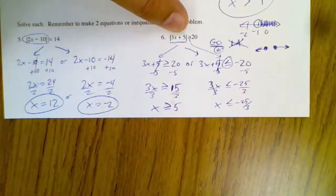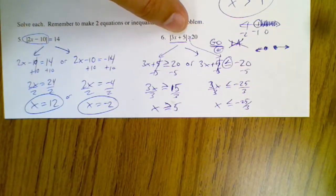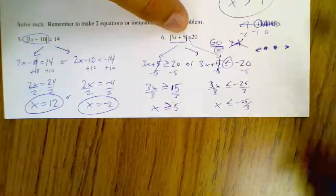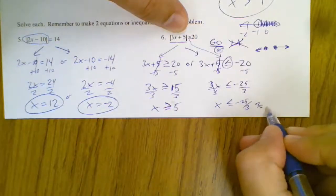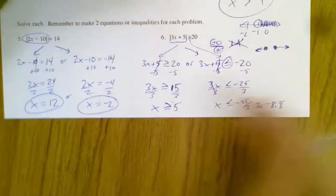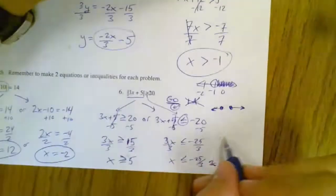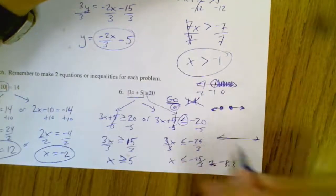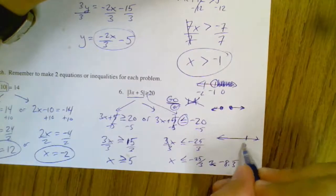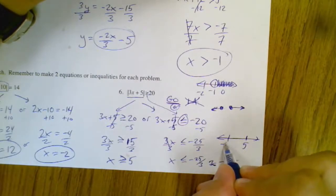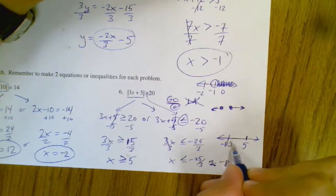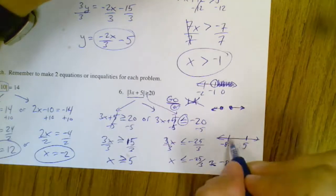If you wanted to know what that was, you can just divide it on your calculator and say, oh that's about negative 8.3 repeating. Now that's kind of useful because if you had to graph this answer, which sometimes you do,